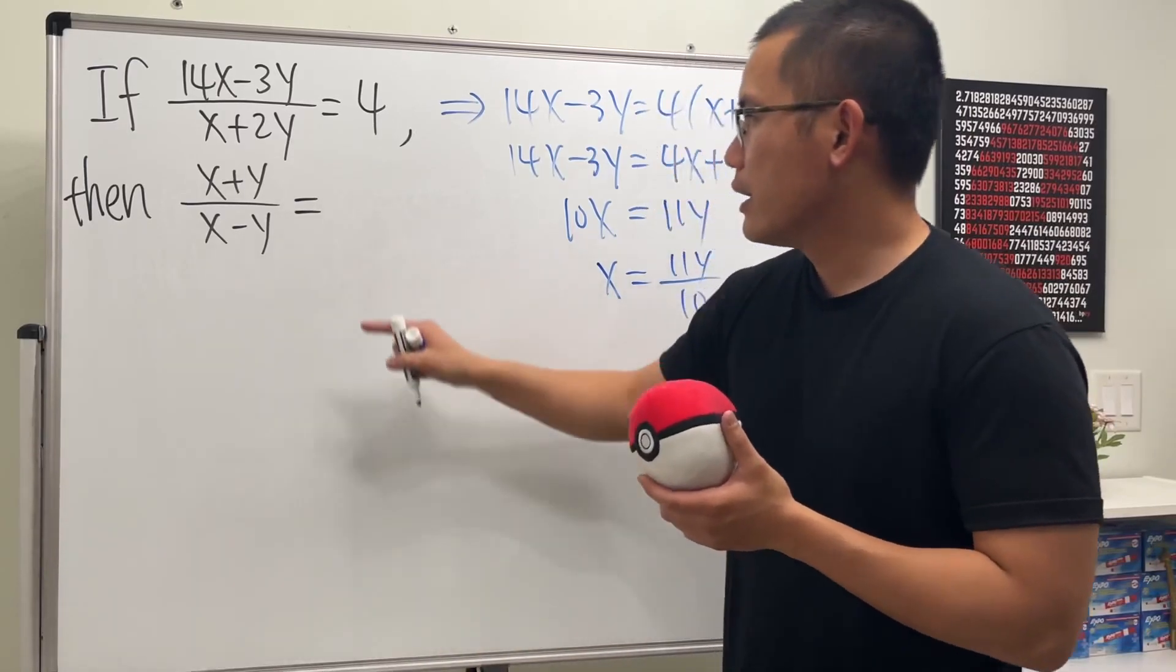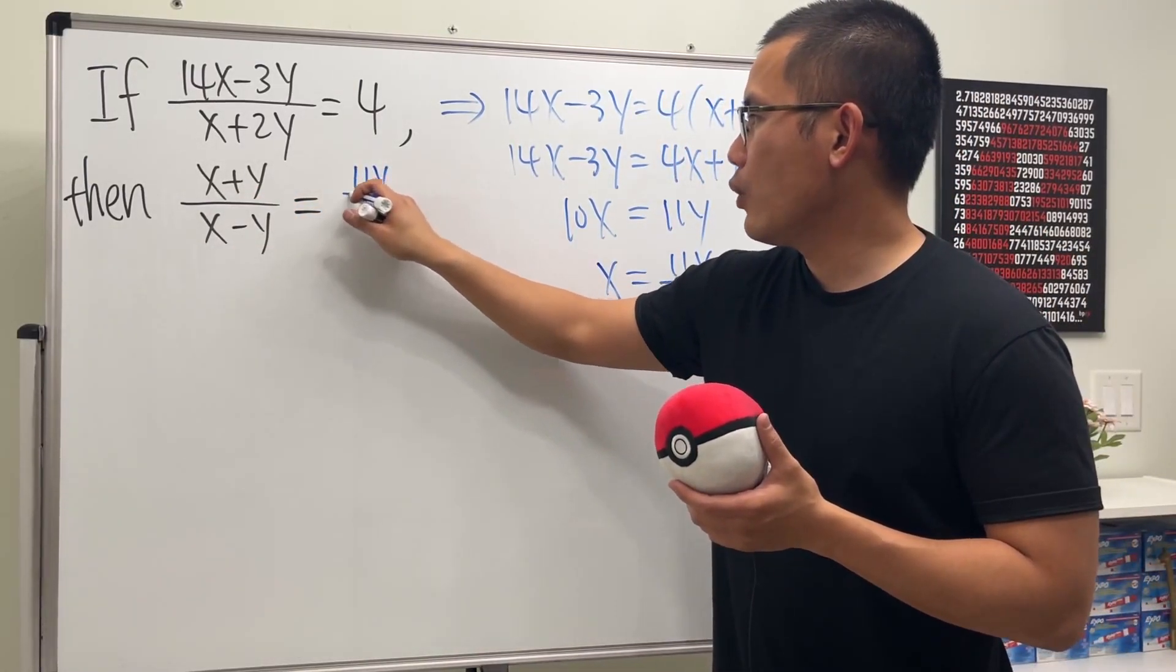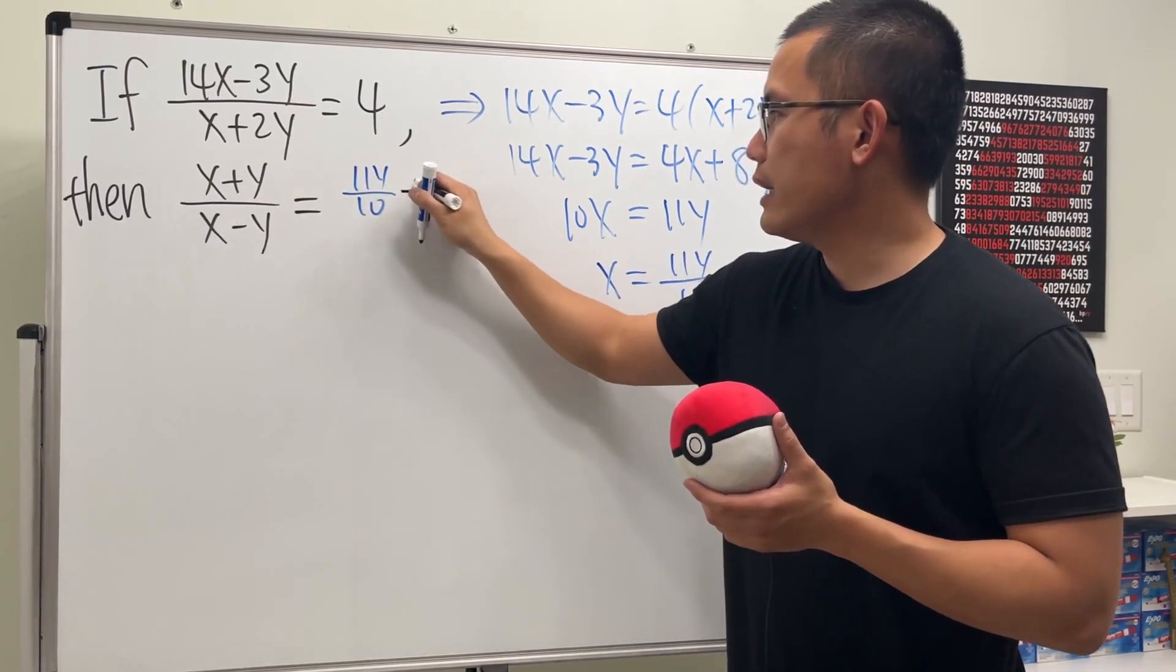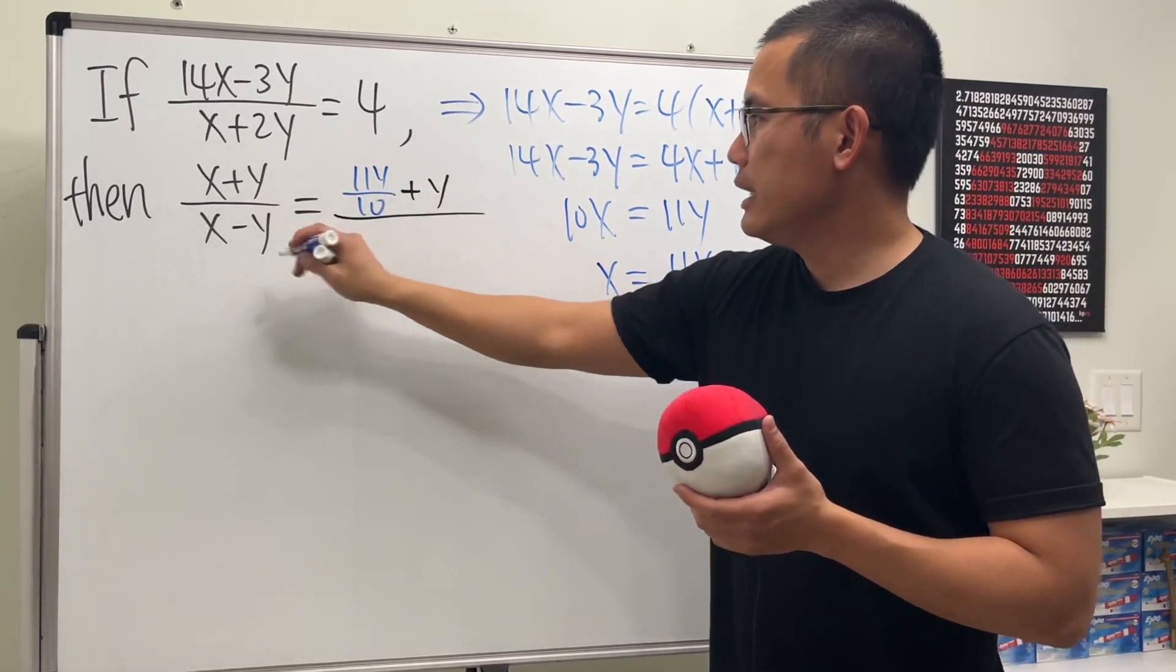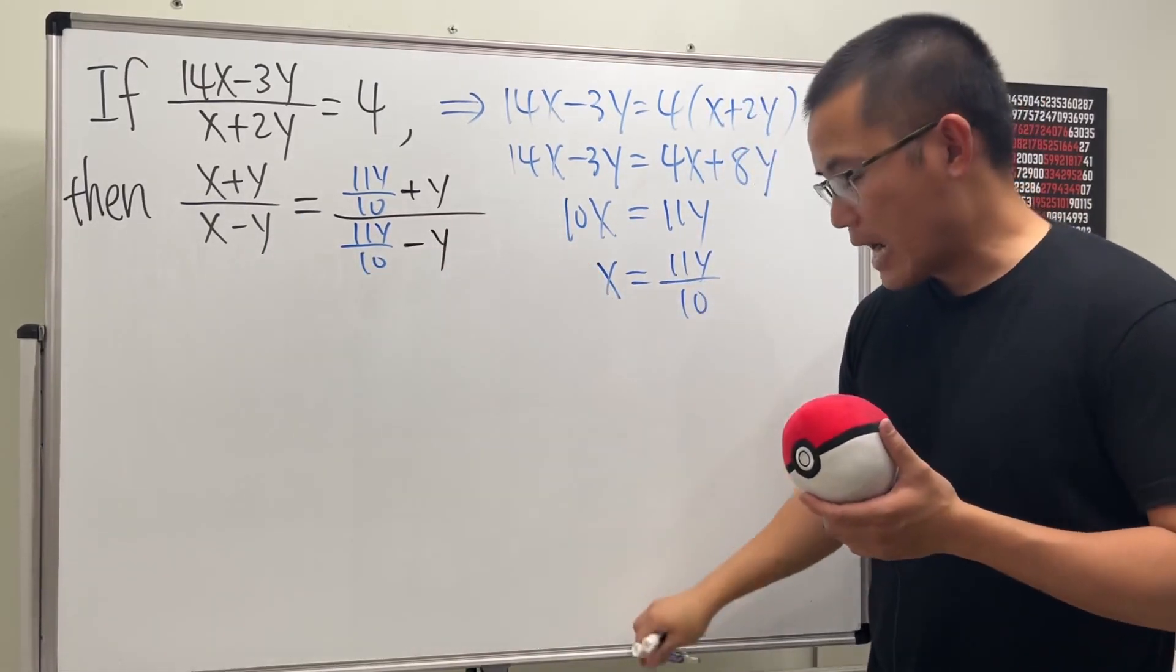And now let's go here. x is equal to that. So we have 11y over 10 and then plus y over 11y over 10 and then minus y. Yeah, so that is what we have.